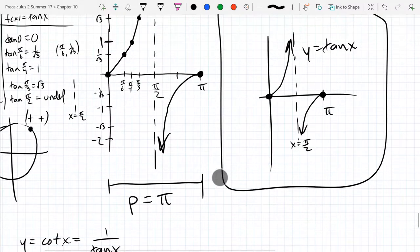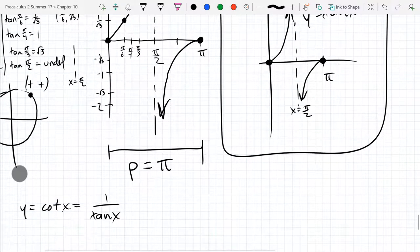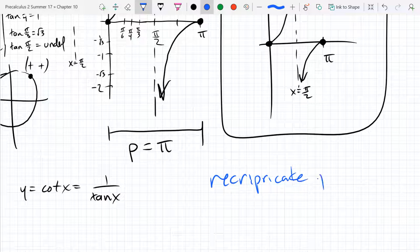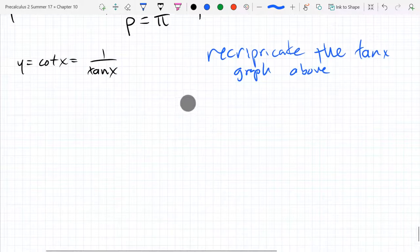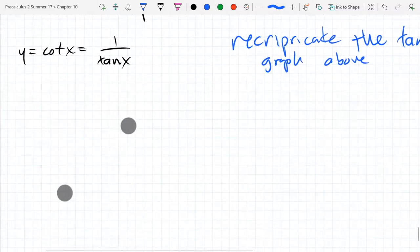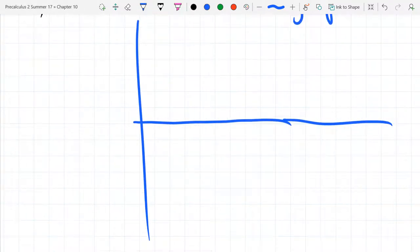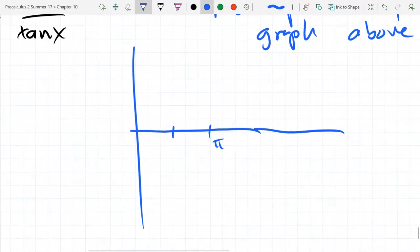So I'm not going to redraw the tangent graph. I got it right there. But I am going to reciprocate it. So we're going zero to pi just like a tangent function.